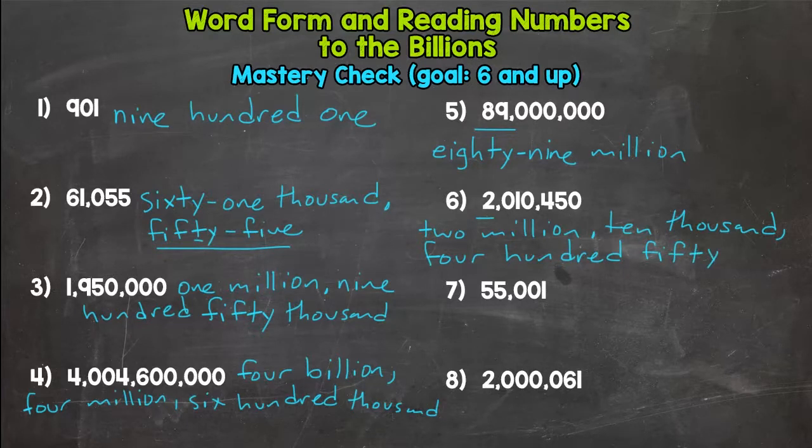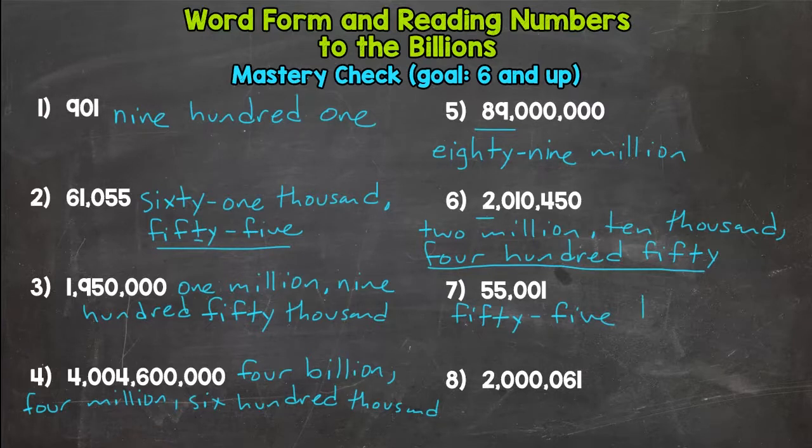You should not have the word 'and' in any of these. For example, number six, you shouldn't have 'four hundred and fifty.' 'And' is a very important word when we get to decimals, so you should never have the word 'and' if it's only whole numbers. Alright, number seven: fifty-five thousand, one.